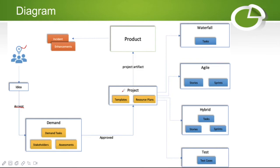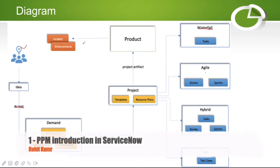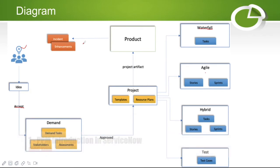Once the project is created, it can be divided into three parts: waterfall, agile, and hybrid. If you don't install the Agile plugin, you will only see waterfall tasks. Once you install the Agile Development plugin, you can create agile and hybrid projects — hybrid meaning waterfall plus agile. From the waterfall model you can create change requests; from agile tasks you can create stories and sprints.